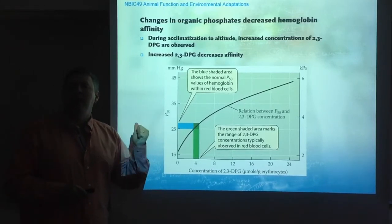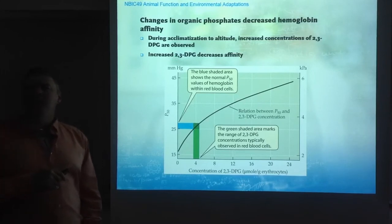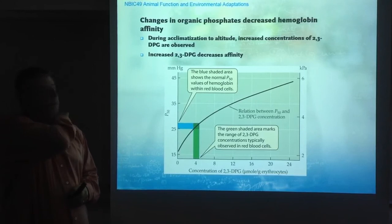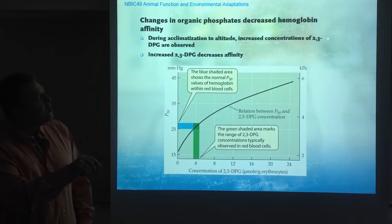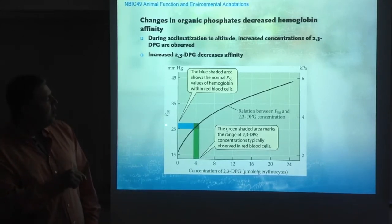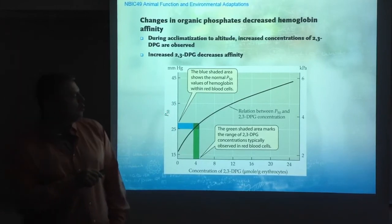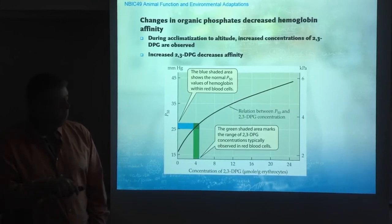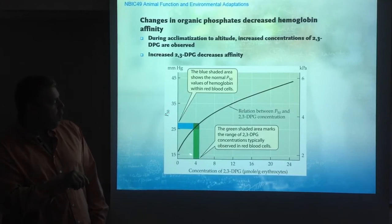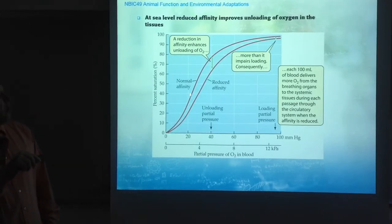Together with changes in red blood cell content, there are changes in the organic phosphate 2,3-DPG. 2,3-DPG is an organic phosphate that changes the affinity of hemoglobin for oxygen. During acclimatization to altitude, we see an increase in concentrations of 2,3-DPG. The effect of increasing 2,3-DPG is that the P50 for hemoglobin for oxygen increases, which means that the affinity decreases. This results in a shift of the oxygen dissociation curve toward a reduced affinity curve.